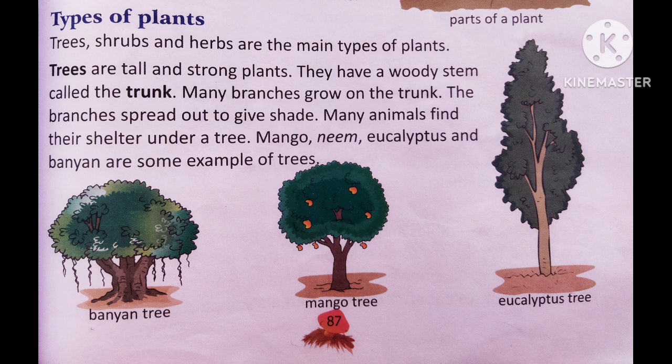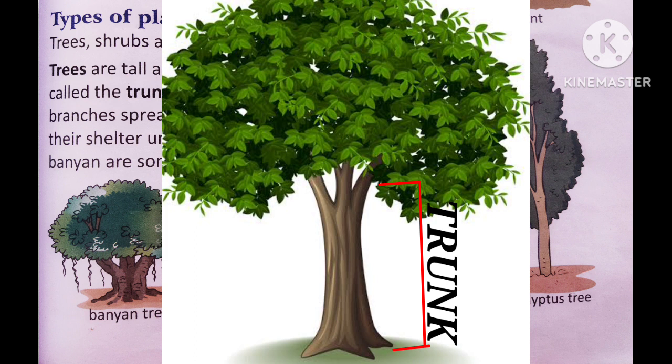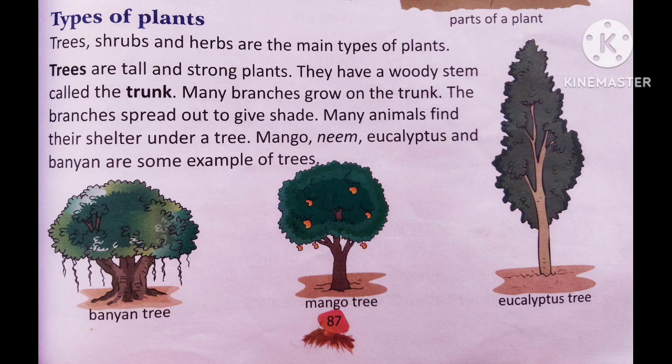Trees are very tall and strong plants with a very thick woody stem called the trunk. They live for many years and give shade to us. They give shelter to many different animals and birds. Birds make their nests on trees. When you move out of your house, you can see different big plants — mango tree, neem tree, banyan tree — these are all examples of trees.